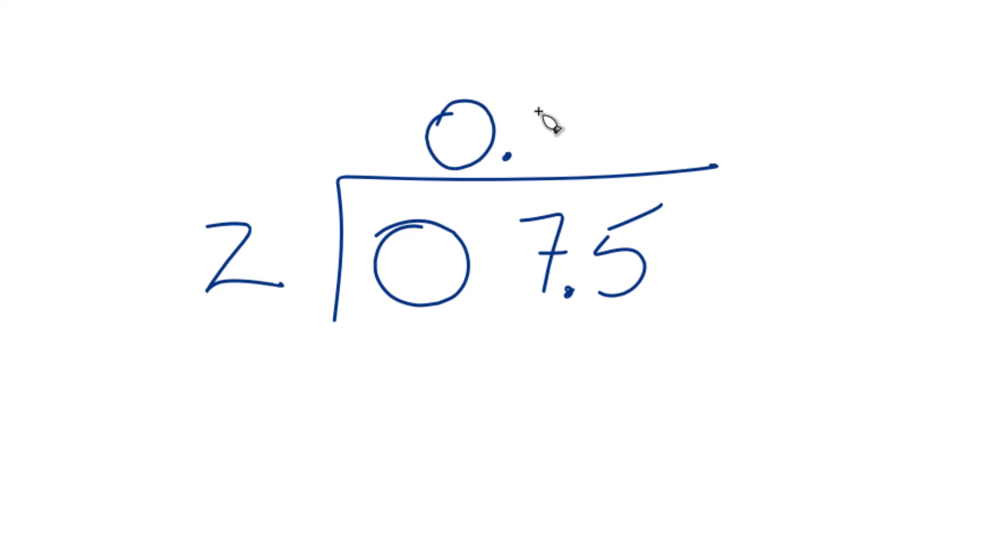So now 3 times 2, that's 6. We subtract 7 minus 6 is 1. 2 doesn't go into 1. Let's bring the 5 down and we'll move over 1 here.